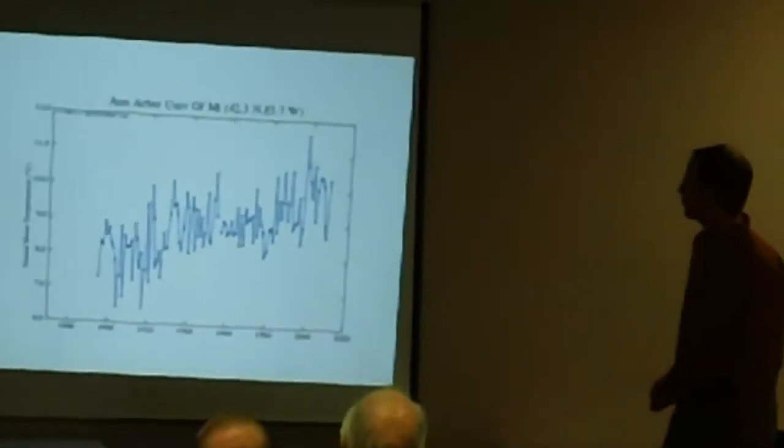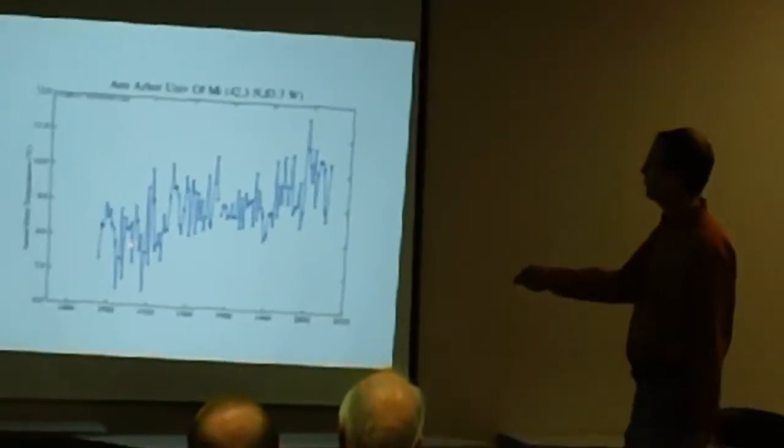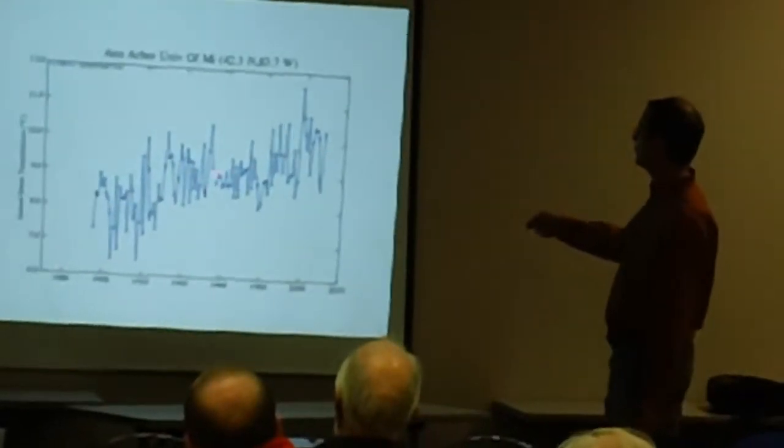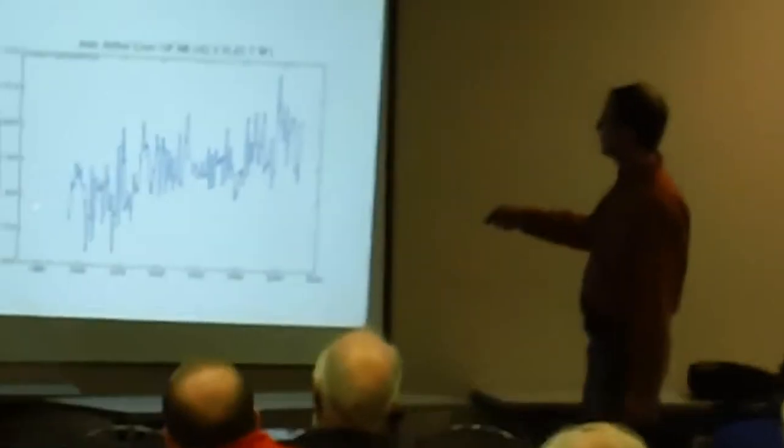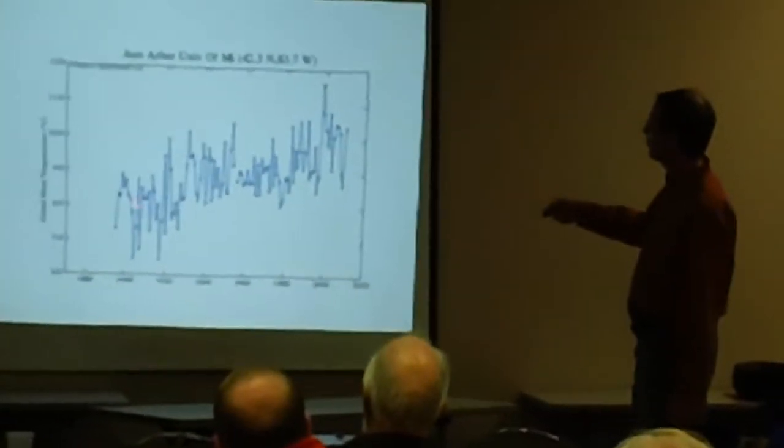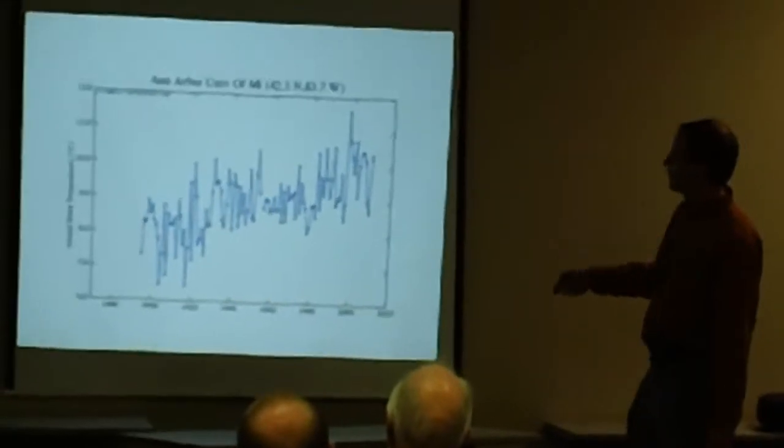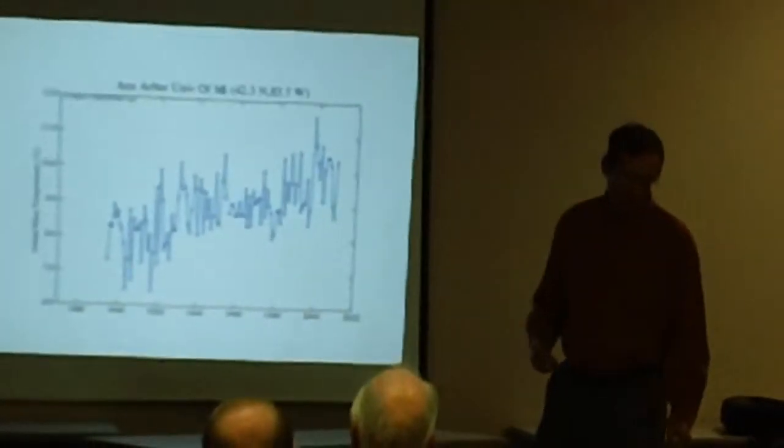All right, let's look more locally. What's the temperature done in Ann Arbor? Well, since 1895, yeah, sure enough, it's gone up too. Actually, quite a bit more than the U.S. average because we're scaled here in centigrade. It looks like maybe a degree and a half centigrade, close to three Fahrenheit.